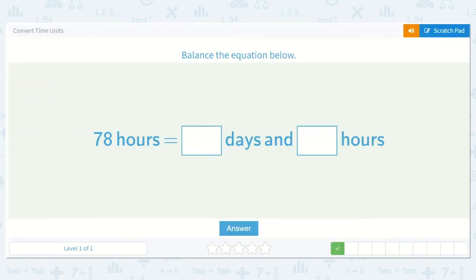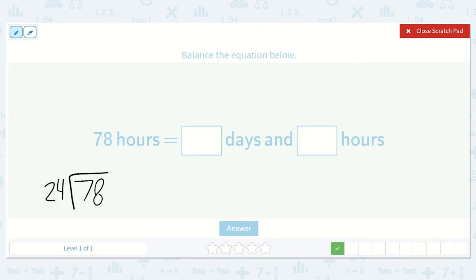Here we have 78 hours is equal to how many days and how many hours. So I could look at 78 and think how many times would 24 fit into 78? Because I know that if I divide 78 by 24, then I will get how many days are in 78 and then we'll find out how many are left over.